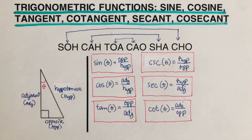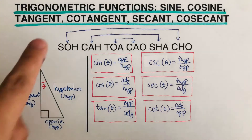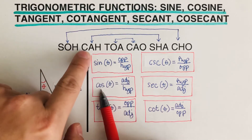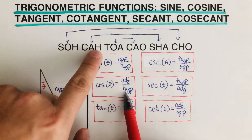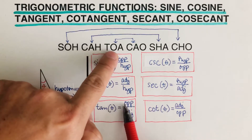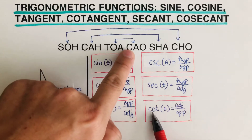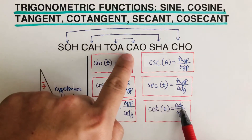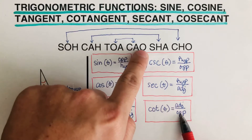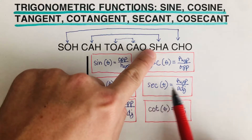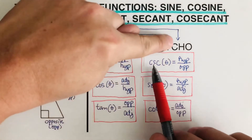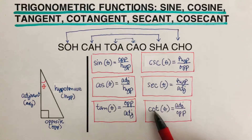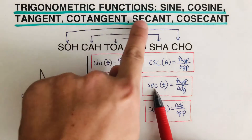Going back to the formulas: sine is equal to opposite over hypotenuse, cosine is adjacent over hypotenuse, tangent is opposite over adjacent. Cotangent is equal to adjacent over opposite — I put them next to each other since they are partners. Secant is hypotenuse over adjacent, and cosecant is hypotenuse over opposite.